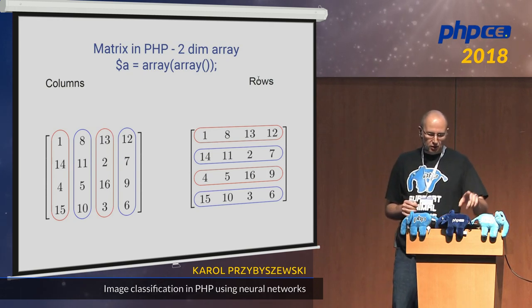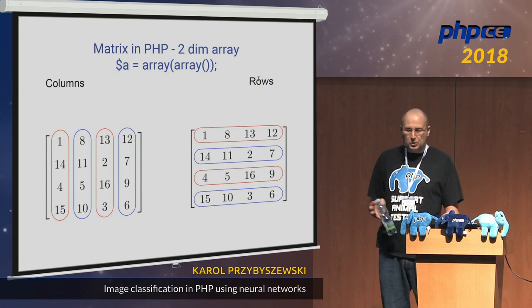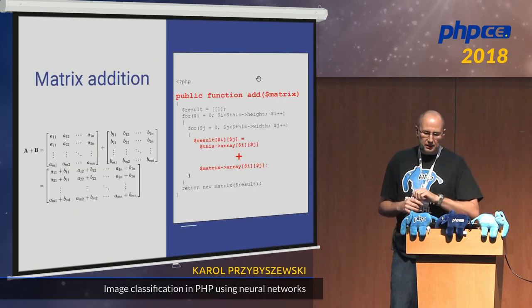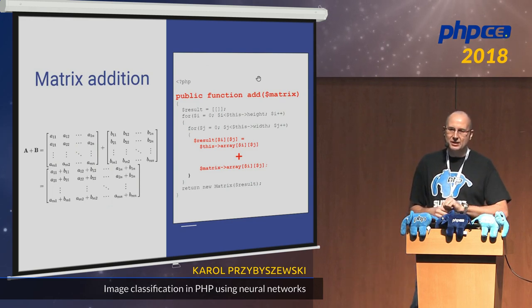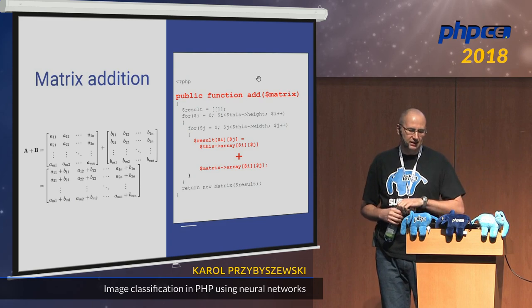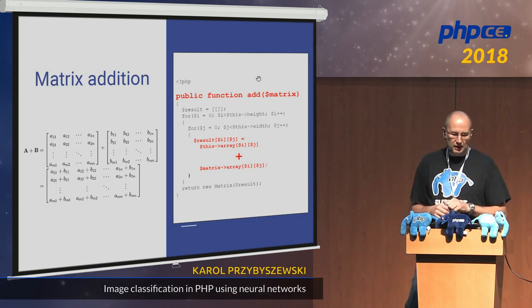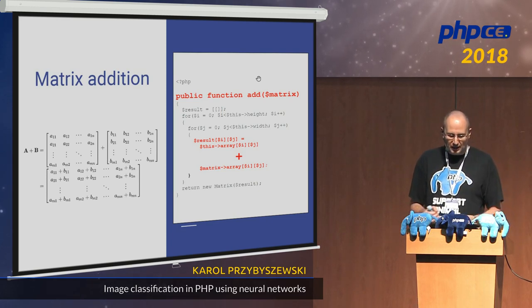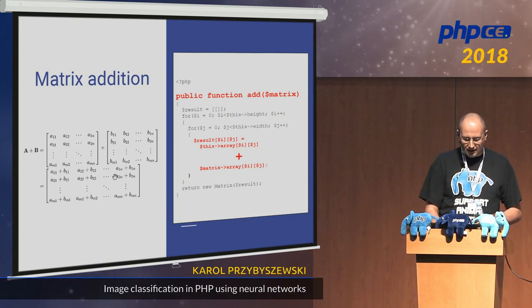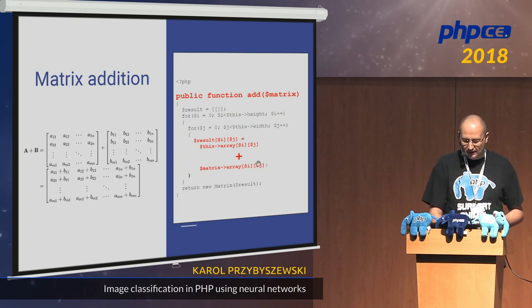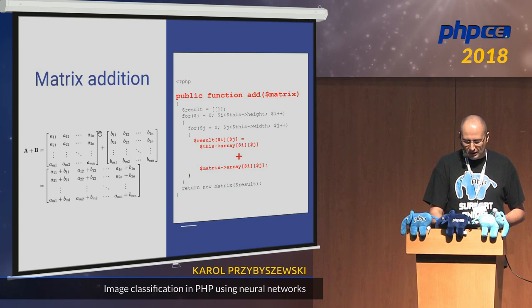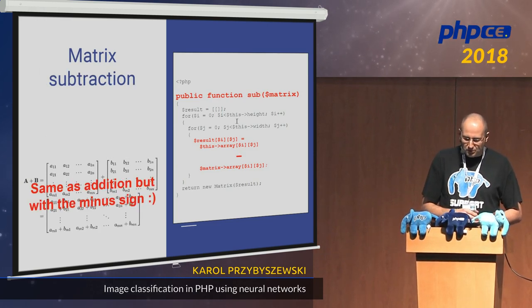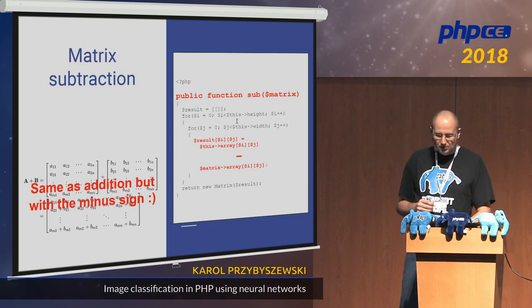Going slightly deeper: first is matrix addition. If we want to work with image processing and machine learning, we have to operate on matrices. Matrix addition is actually quite simple — you go element by element in both arrays, add them, and the result is another matrix. Here's the mathematical description and the PHP code: just two for-loops. Subtraction is the same as addition, just with the minus sign.